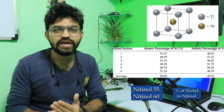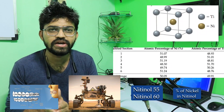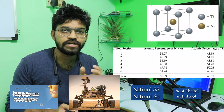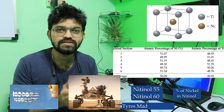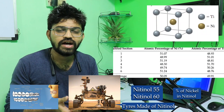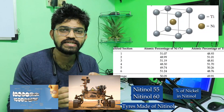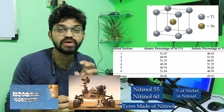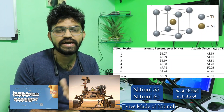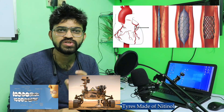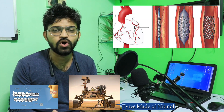Nitinol has a lot of applications, from personal to industrial. It is used in dental braces, and also in NASA's several projects such as rover missions — the rover tires are made up of Nitinol wires. It is also used in biomedical engineering; Nitinol stents are used to remove blood clots.